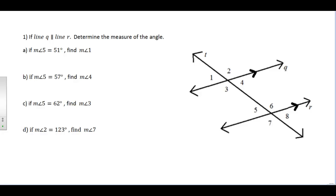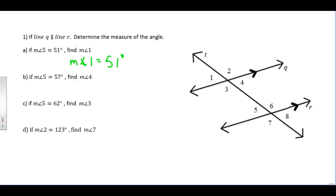Let's try a few examples. In this picture, the two lines are given as parallel. We're told angle 5 is 51 degrees and want to find angle 1. Since angles 1 and 5 are corresponding angles, angle 1 has to be 51 degrees as well. For part B, if angle 5 is 57 degrees, find angle 4 — angles 5 and 4 are alternate interior angles, so by the Alternate Interior Angles Theorem, angle 4 is also 57 degrees.